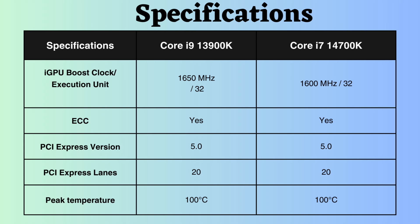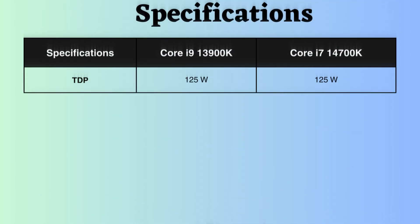Both of these processors have a 125 watt TDP. A higher TDP generally indicates that the processor consumes more power and dissipates more heat during operation.